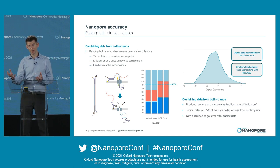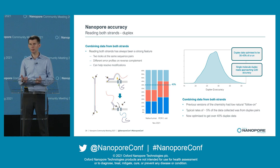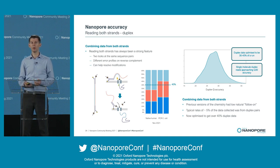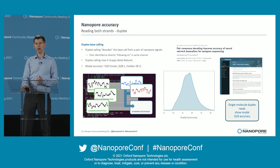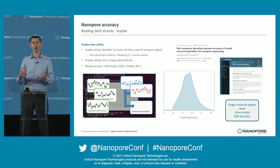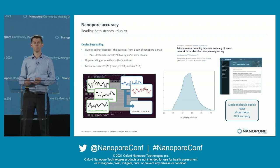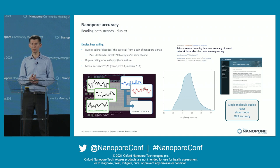Of course, you can read both strands of DNA — we have this duplex technology. We are still optimizing this chemistry, but the new kits are duplex-enabled. By reading both strands of DNA, you can get up to almost a modal of Q30 — that's 99.9% accurate single molecule accuracy. Duplex base calling works by running both signals through the base caller, which decodes a path in sequence space consistent with both of those complementary signals. That's been in Bonito, our research base caller, for a while now, and it's now in Guppy, our production base caller, in a beta release stage. We're putting together a few more integrated workflows and will flip that to a full release.